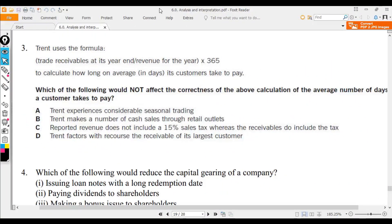The company uses this formula: trade receivable at year-end divided by revenue for the year times 365 to calculate the receivable collection period. Which of the following will not affect the correctness of the above calculation of the average day the customer takes to pay? Now I already identified some error here class.